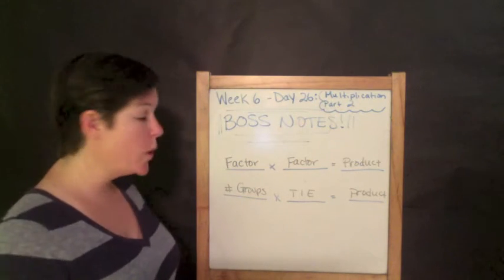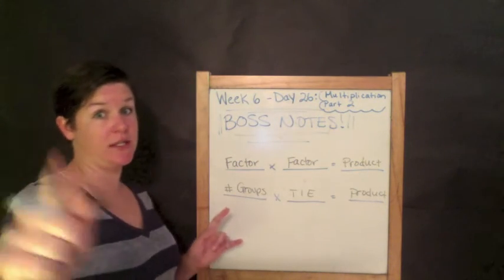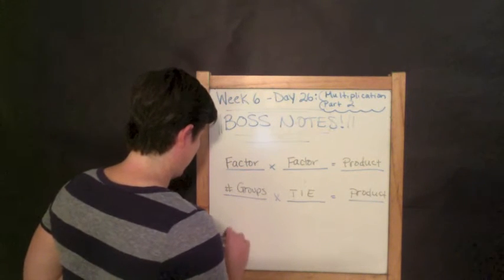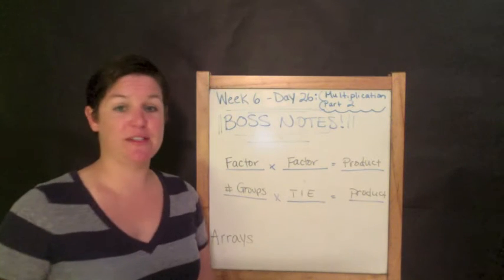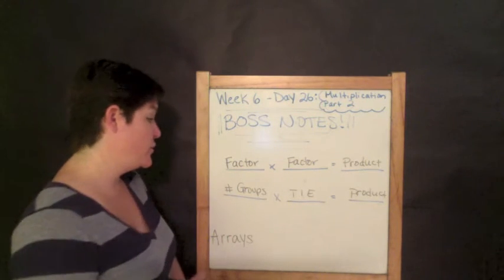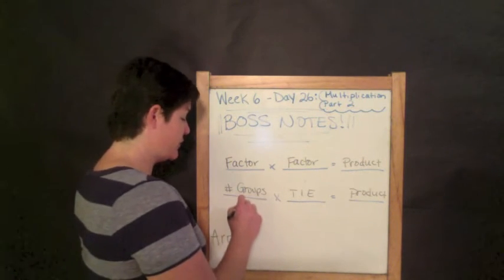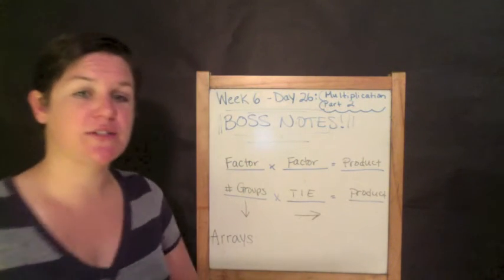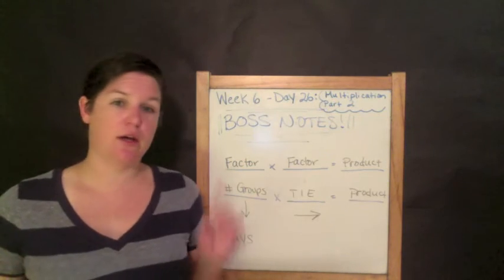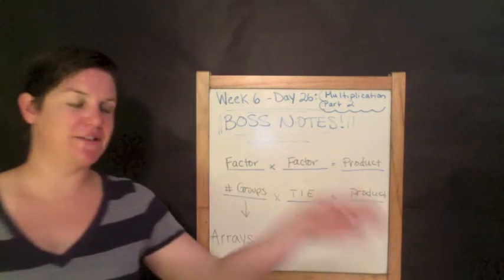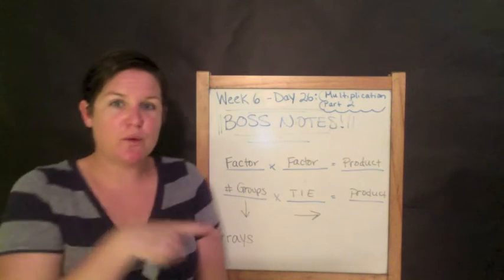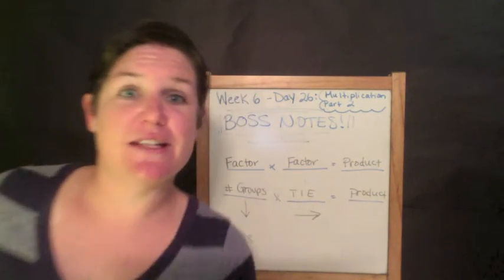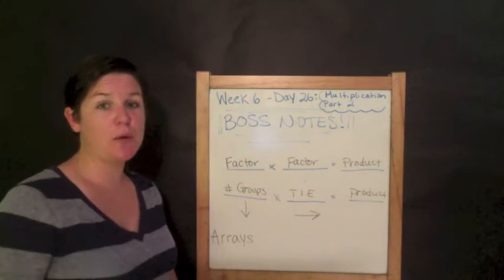For the next set of notes, we learned last week that the number of groups is our first factor and the things in each or tie is our second factor which equals the product. The product is also known as our total. But today with arrays, I want you to remember that the first number we go down and the second factor we go across and to the right. Down to the right, down to the right.